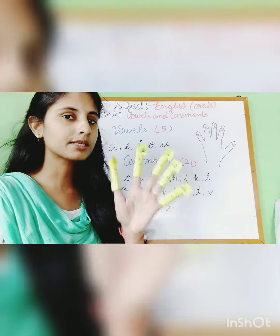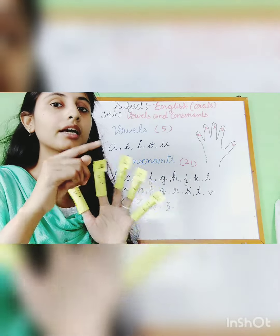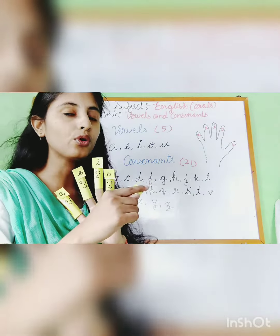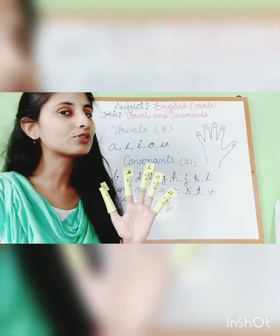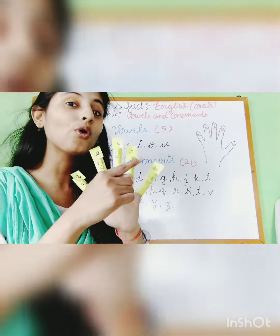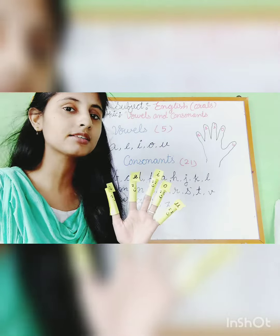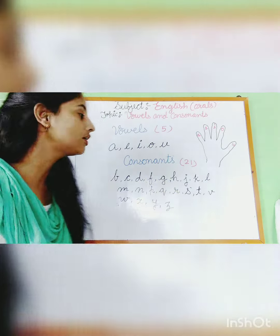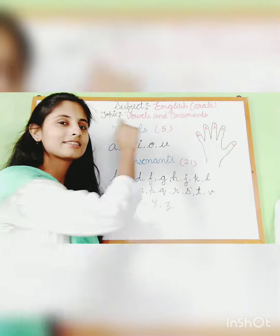So, the 5 siblings — A, E, I, O, U — who used to live with their grandmother are called vowels. So, vowels: A, E, I, O, U. And the rest of the 21 siblings, who used to live with their mother, are called consonants.